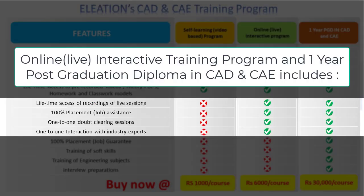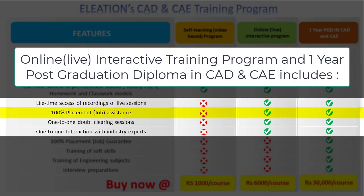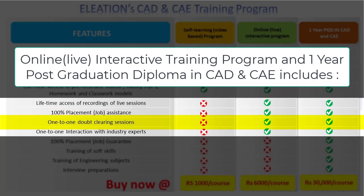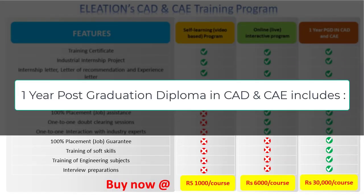In the online live interactive training program and one-year PG diploma in CAD and CAE, you will get lifetime access to recordings of live sessions, 100% placement and job assistance, one-to-one doubt clearing sessions, and one-to-one interaction with industry experts. In the one-year post-graduation diploma in CAD and CAE, you will get 100% placement and job guarantee.